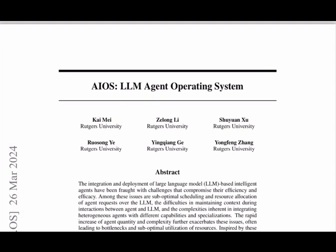The authors, a group from Rutgers University, set out to address critical challenges in the development and deployment of intelligent agents that use large language models, or LLMs. Their research proposes AIOS, a new operating system specifically designed to handle LLM agents efficiently and securely. From suboptimal scheduling and resource allocation to maintaining agent context, integrating diverse tools, and managing privacy, the authors outline the core challenges of building intelligent agents.